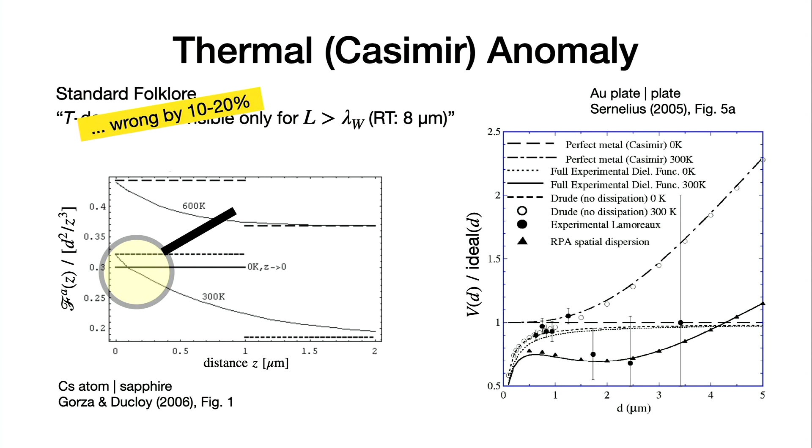This is the case for the plate and the plate. This dark curve here is the calculation of the Casimir interaction using the standard dielectric function conductivity of gold. You see here a significant difference with respect to zero temperature, which is the dotted line. Already here at 1 micron there's a significant factor 2 or so difference between the two curves. People were trying to understand why this is so.